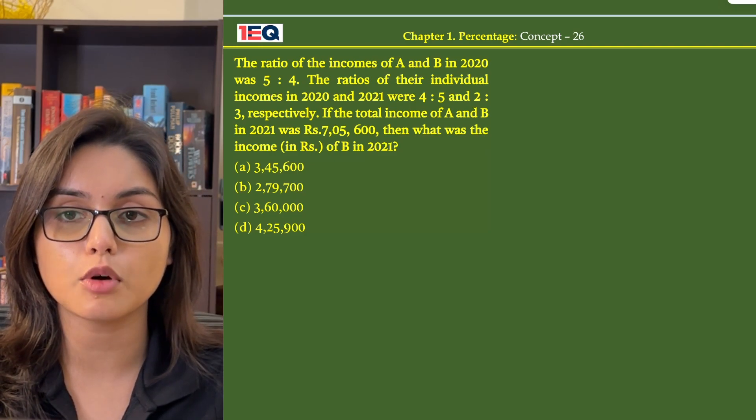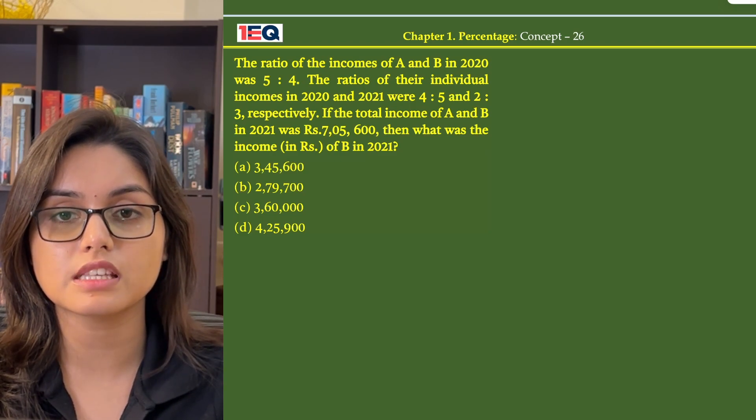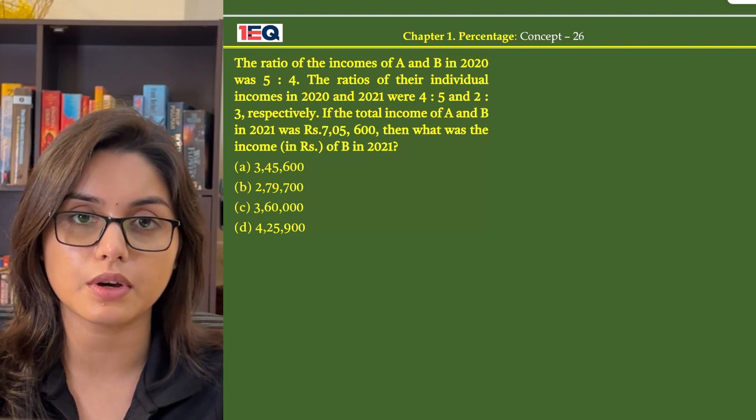If the total income of A and B in 2021 was Rs. 7,05,600, then what was the income of B in 2021?